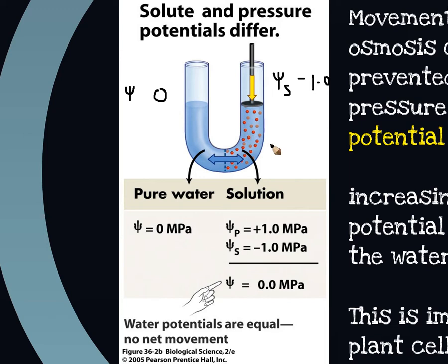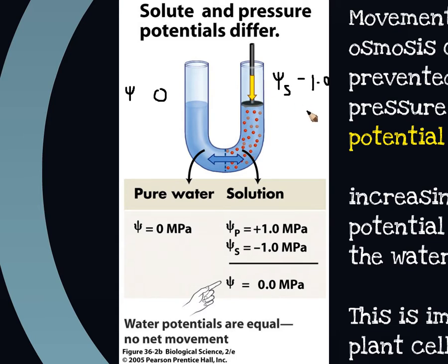So in this instance, water would normally move from the side with a water potential of zero, where it's pure water. Because we've added solute to the other side, the solute potential is negative one, meaning the water potential on that side would be negative one. But what if I apply a physical force — literally pushing down on that plunger — of one?